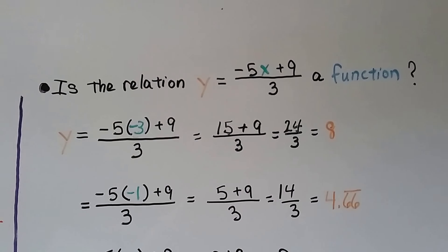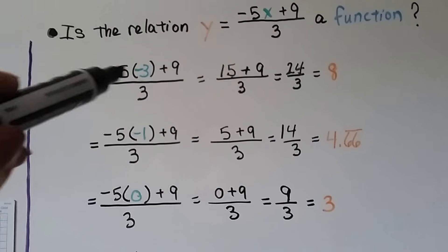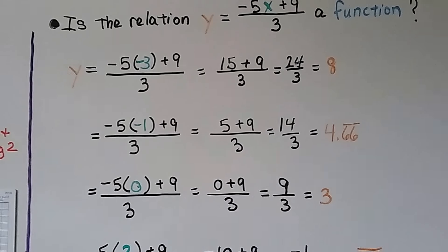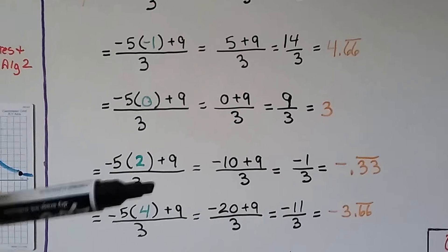We can try it again. Is the relation y equals the quotient of negative 5x plus 9 and 3 a function? And what we do is we put in some values for x to come up with y. And we do all our math. We do several of them.